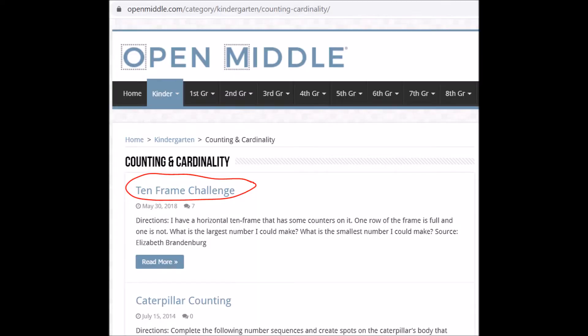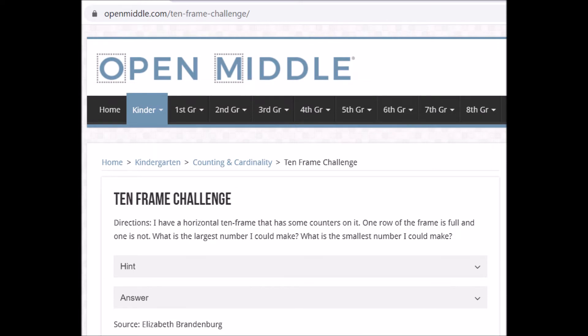Okay, so let's do the kindergarten example first. So to find this one, I'm going to go to kindergarten. I'm going to tab down to the counting and cardinality one. And then this is the first one available. It's called the 10 frame challenge. It looks like it was written by Elizabeth Breedenberg. She's the source for this one. So the question says, I have a horizontal 10 frame that has some counters on it. One row of the frame is full and one is not. What is the largest number I could make? What is the smallest number I could make?